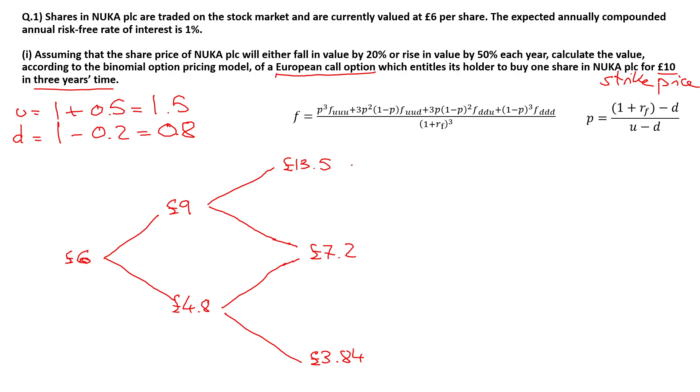And then one more time, we go up and down, up and down, and up and down. £13.5 times U gives us £20.25. £13.5 times D gives us £10.8. £7.2 times D, we get £5.76, and the last one is £3.072.